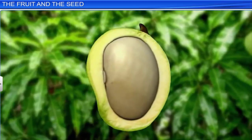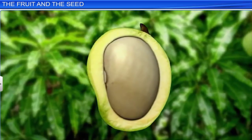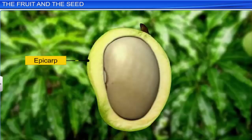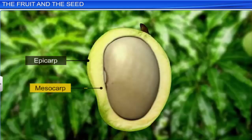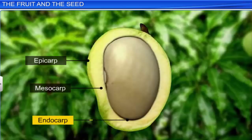In the mango, the pericarp is differentiated into three distinct layers: the epicarp, which is the outermost layer or peel; the mesocarp, which is the thick pulpy middle layer; and the endocarp, which is the innermost layer that directly surrounds the seed.